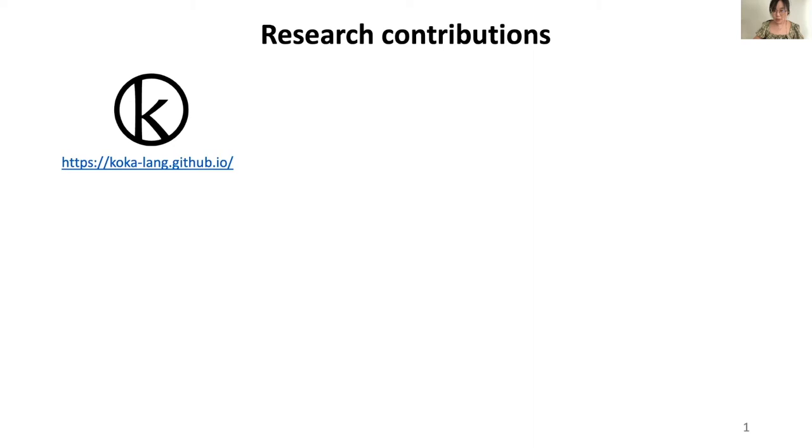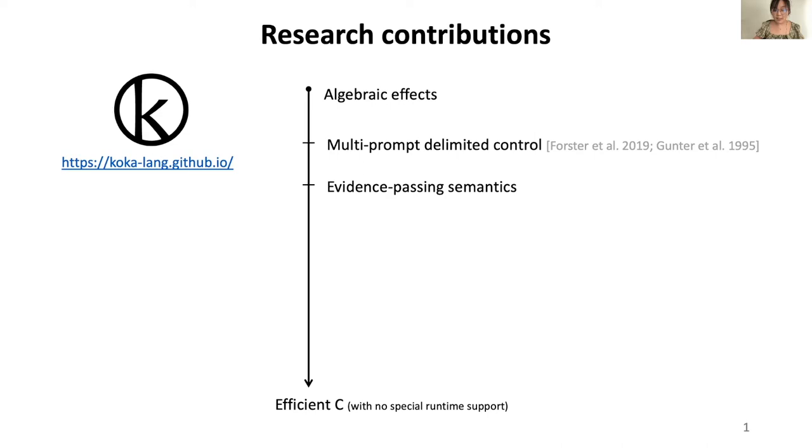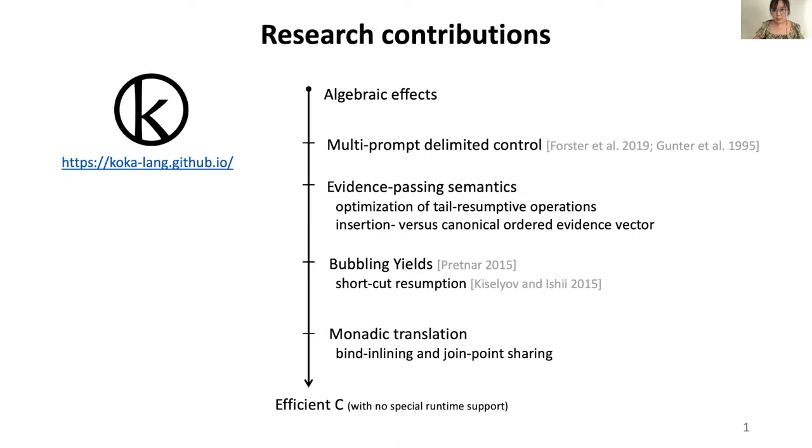In this work, we gave a formalized evaluation semantics for algebraic effects into polymorphic lambda calculus, and show how this technique can be used to generate efficient C code with no special runtime support. We achieve our goal using a sequence of refinements to the semantics of algebraic effects through multi-prompt delimited control, evidence-passing semantics, bubbling yields, and a monadic translation, and we prove each step is semantics-preserving.